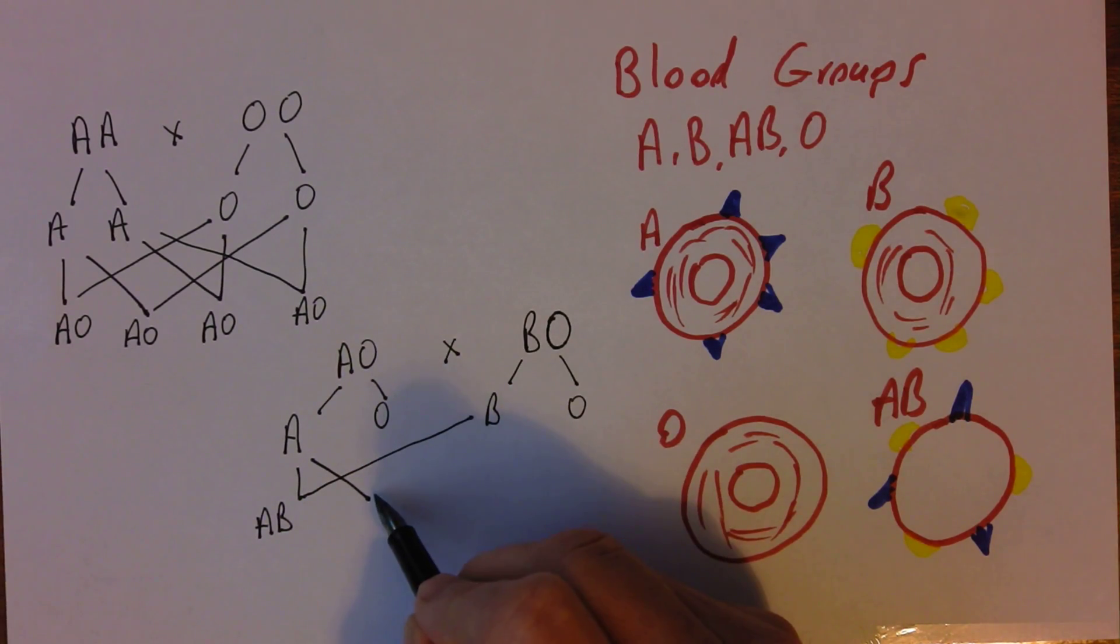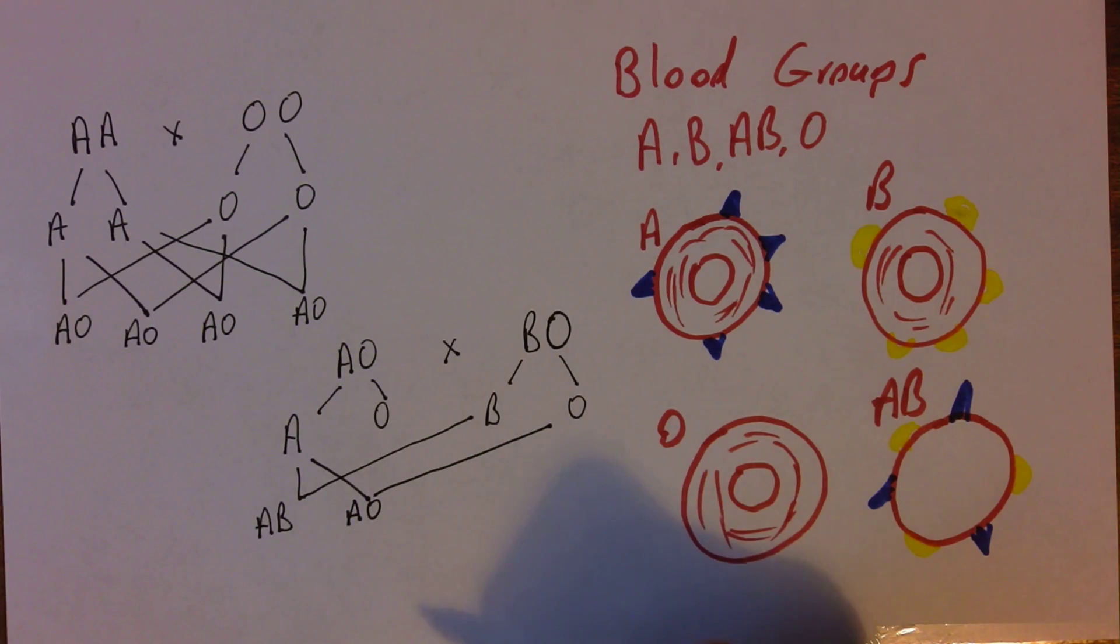But if we take A and O, this person will be AO. We can see they're heterozygous genotypically, but because the A is dominant, phenotypically they will have blood group A.